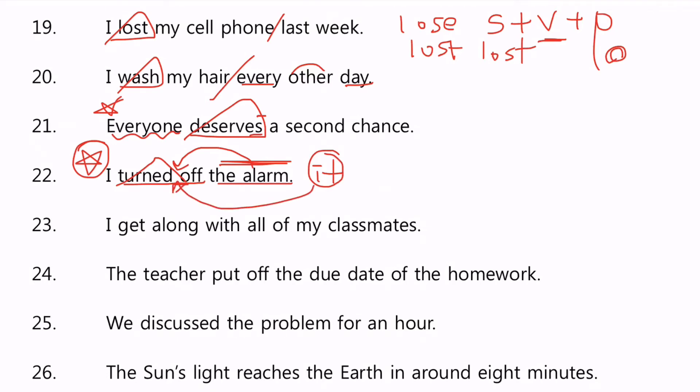만약에 이게 대명사다, it과 같은 대명사라면 이 2형동사 이 사이에 들어가야 돼요. 그래서 I turned it off. 이렇게만 써야 된다는 거예요. I turned off the alarm. I turned the alarm off.